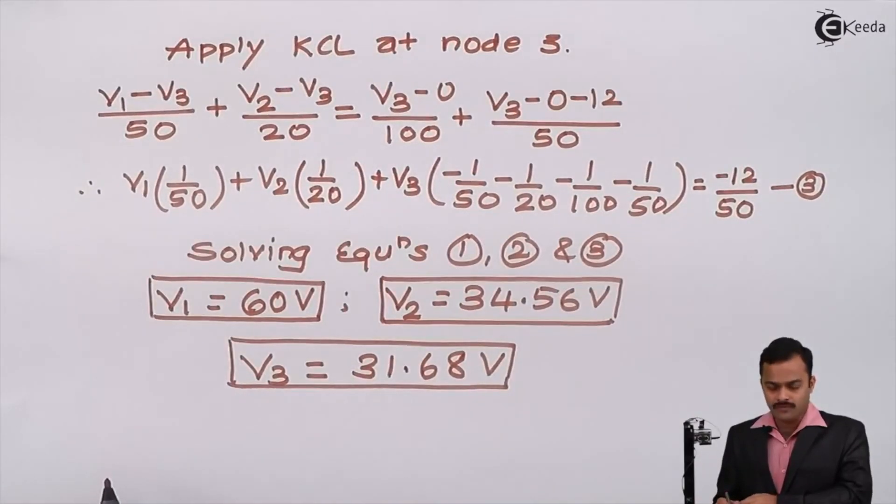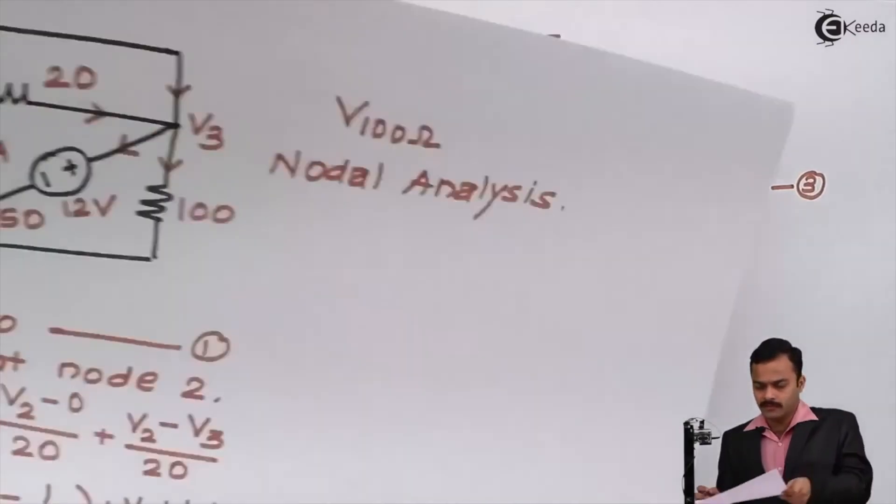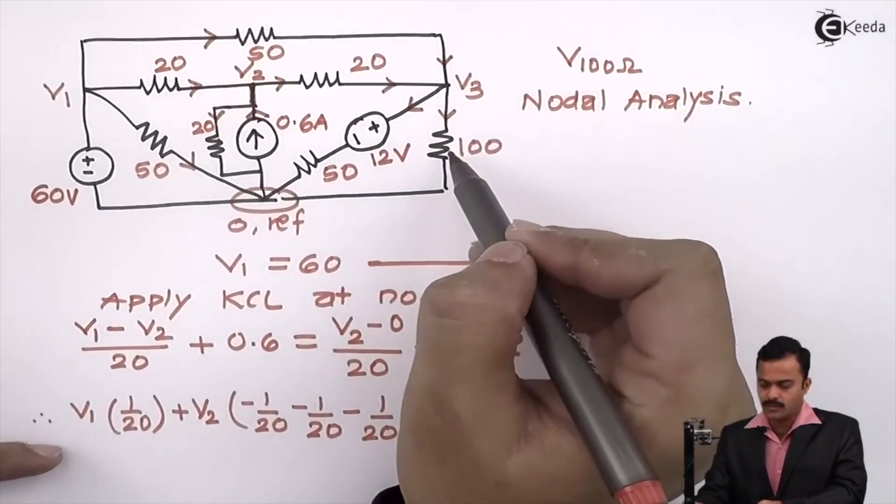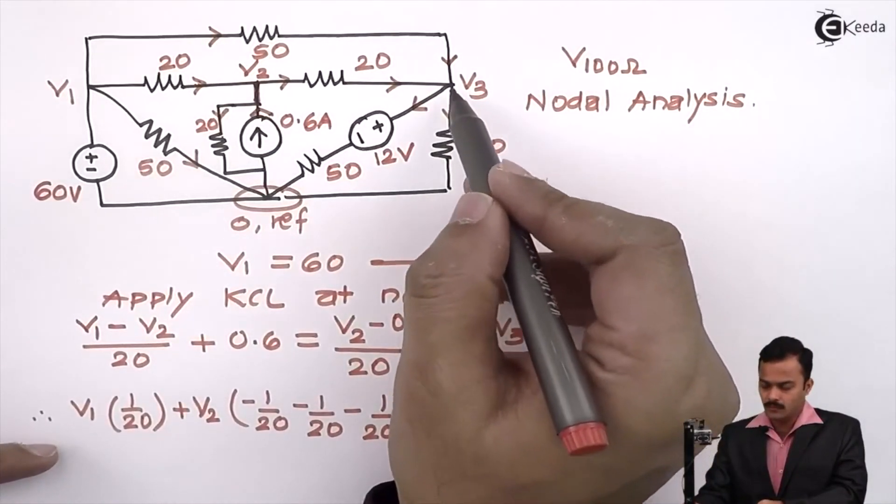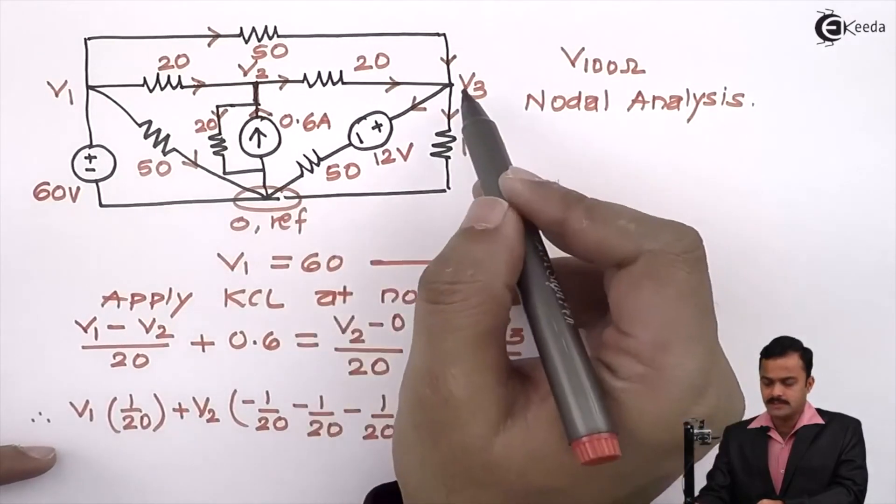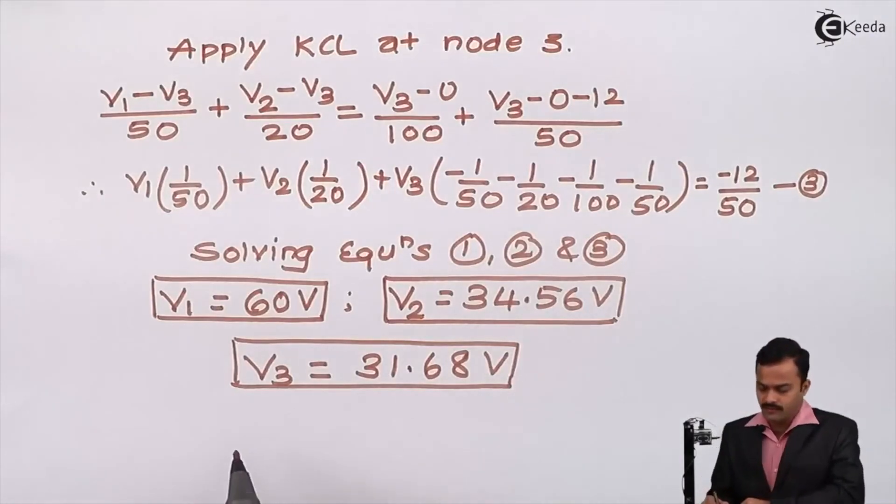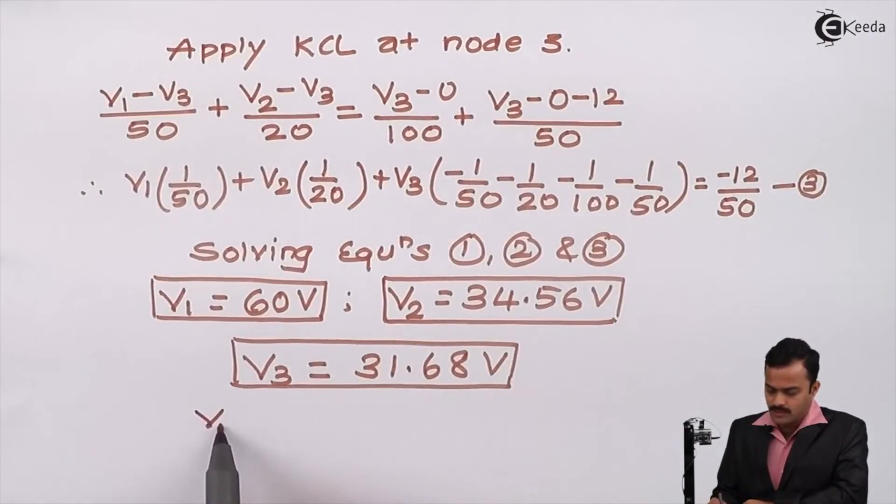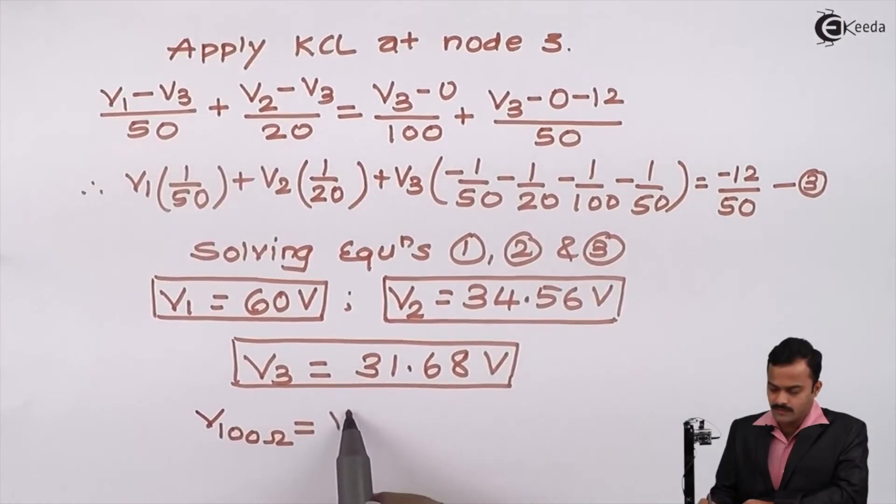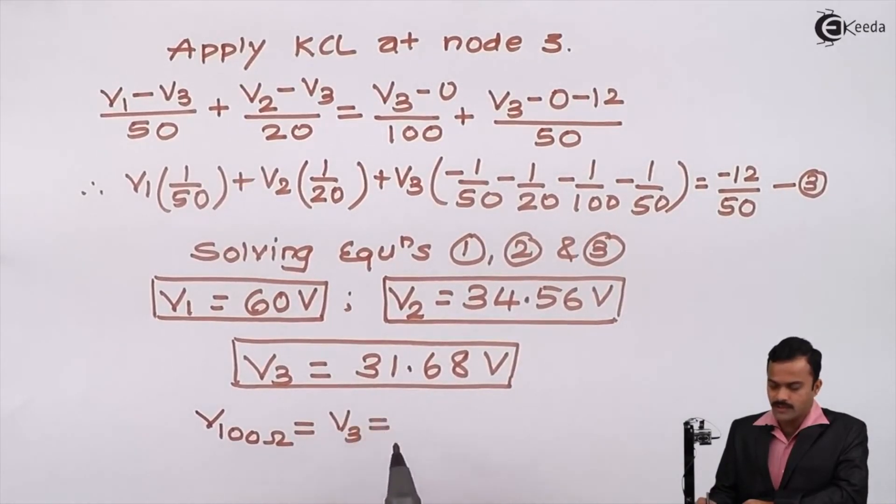We have been asked to find out voltage across the 100 ohm resistance. For 100 ohm resistance, the voltage is V3 minus 0, or simply I can say V3. So my final answer, voltage of 100 ohm resistance is same as V3, which we have already calculated: 31.68 volts.